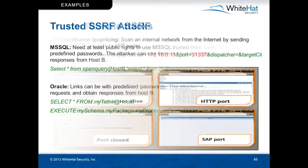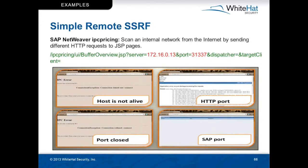Moving on to slide 66, there was another particular vulnerability shown by Alexander — very cool stuff. It was an SAP NetWeaver feature called IPC pricing. In the IPC pricing URL, just a little JSP, it has a server parameter and a port parameter. You can put whatever IP and whatever port you want, and use this feature for simple remote SSRF — very simple internal or external port scanning. It's similar to the cross-site port attack, but shows that this is possible using a server behind the firewall running these business-critical applications.